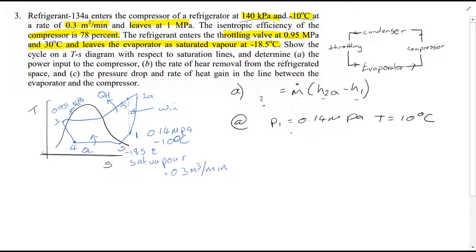So from table A12, you'll see that T saturation at 1 is, for those given values, is minus 18.77 degrees C. Since T₁ is greater than T saturation, you need to use table A13 since the fluid is superheated. And what you'll see H₁ is equal to 246.36 kJ per kg. S₁ is equal to 0.9724 kJ per kg Kelvin, and the specific volume is equal to 0.14605 meters cubed per kg.